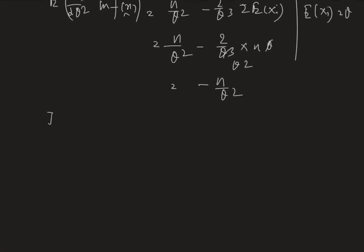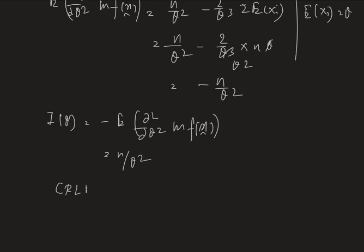So i(theta), which is minus expectation of del squared del theta square ln f(x) curve, equals n by theta square. Therefore the CRLB is 1 by i(theta), which results in theta square by n.